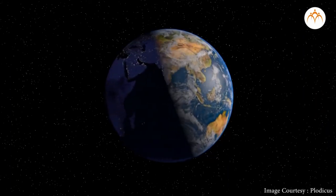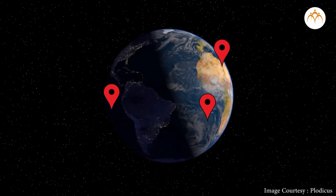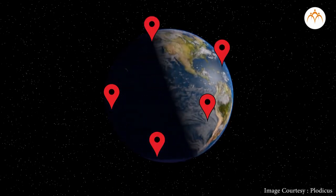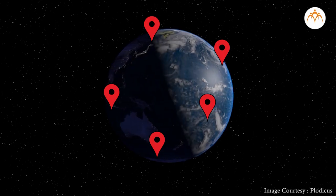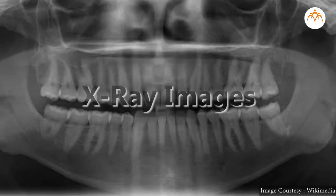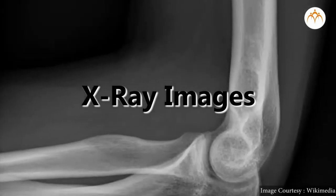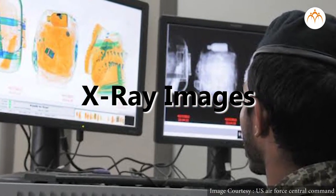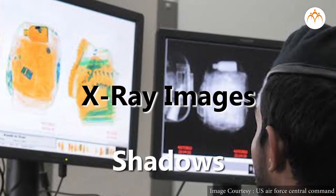Shadow play, also known as shadow puppetry, is an ancient form of storytelling and entertainment which uses flat articulated cutout figures. The first measurement of the size of the earth was based on the length of shadows exactly at noon in different places.